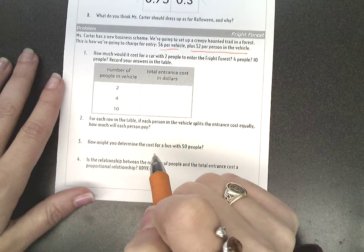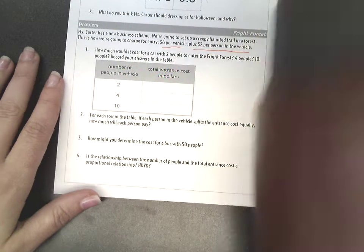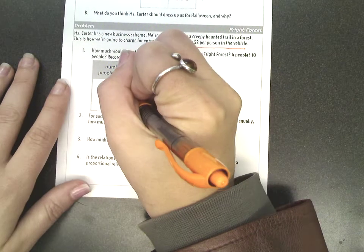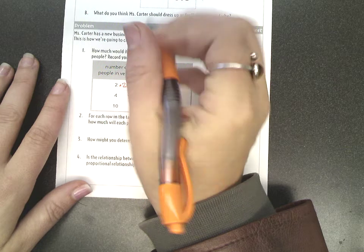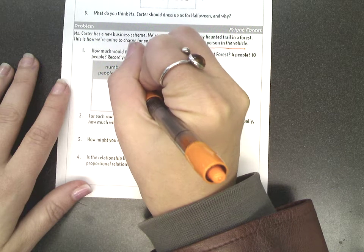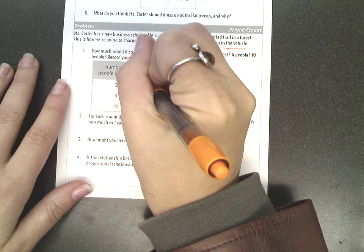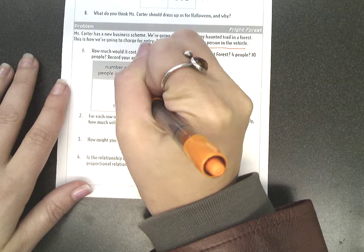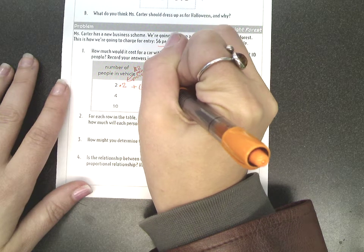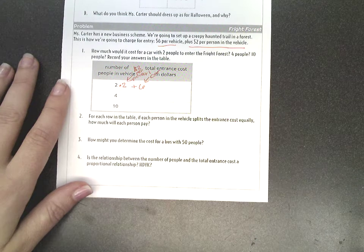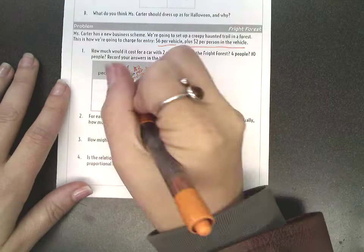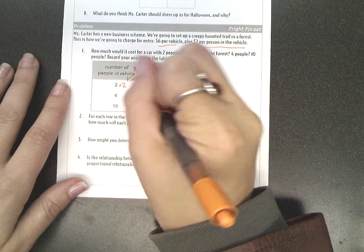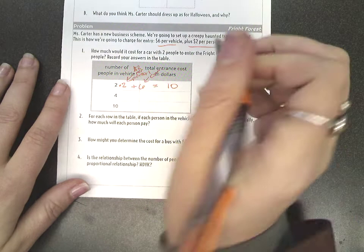And I really liked something that I heard Sierra say that her group talked about. She said, if there are two people in the vehicle, each person is going to pay $2. So that $2 is $2 per person, plus you have to pay six more because that is the car fee. So if we have the $2 per person times two people, we have $4 plus $6, we're going to need to pay $10 total.